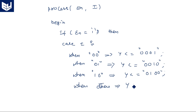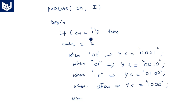For the 'when others' case: y <= "1000". Then the 'else' branch handles when enable is not equal to 1: y <= "0000".